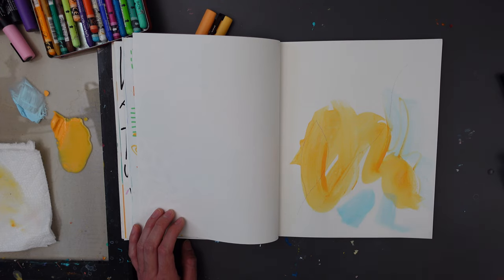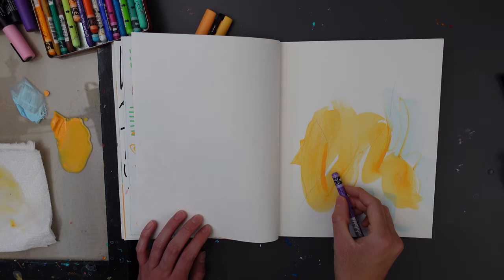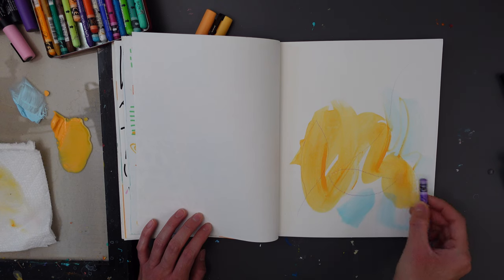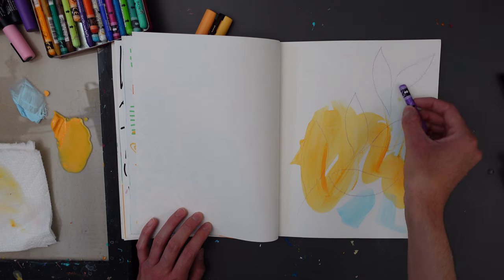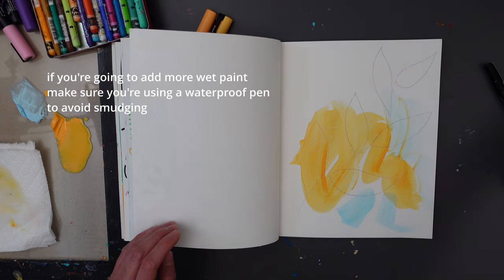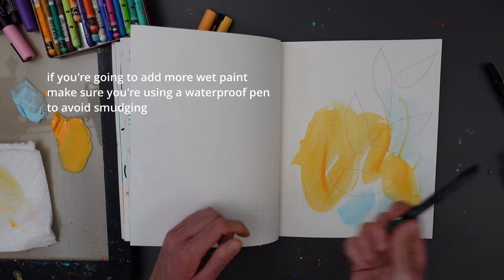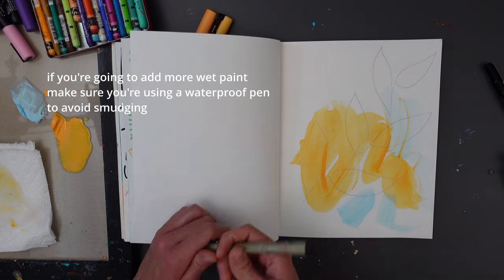And you want to make sure the leaves are large enough so that you'll be able to add some marks inside of them. Cool, so I'm pretty happy with that, and I'm going to trace over it using a pen.